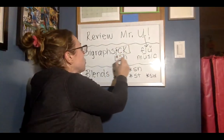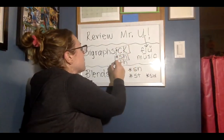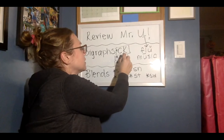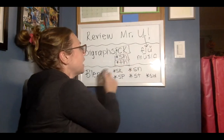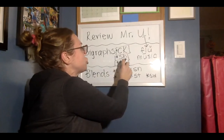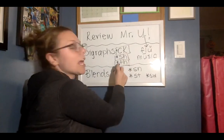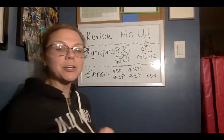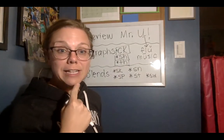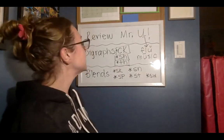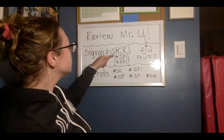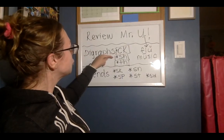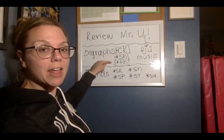So we're going to go over these digraphs today. These digraphs say K, and Sh, and S. And when you do S, you should really see your tongue come through your teeth like that. So we have K, Sh, and S.